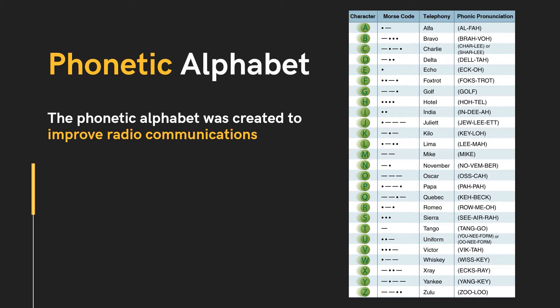The International Civil Aviation Organization (ICAO) is responsible for establishing and maintaining communication standards for the aviation industry. The phonetic alphabet is one such standard, and the aviation industry uses it worldwide.